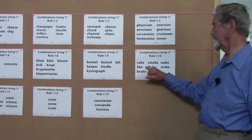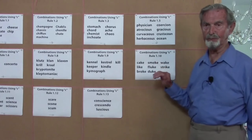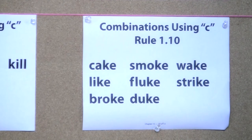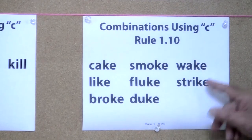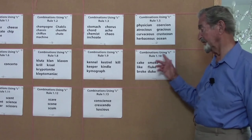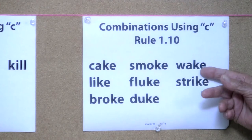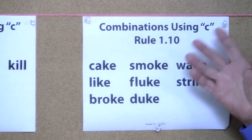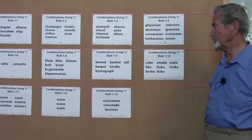This one is interesting because the K has to be used because a C could not be used. Cake: if you put a C in there, it would be case. Notice the silent E means that you cannot put a C in there. If you do, it's going to have the soft S sound. Wake would be wase, strike would be strice. So there are times when the C must be replaced by K.